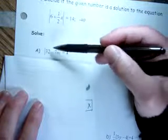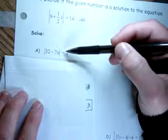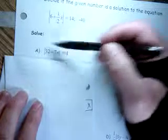If you're solving the absolute value of 32 minus 7n is equal to 4, it's already isolated.